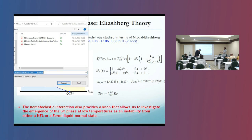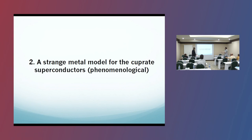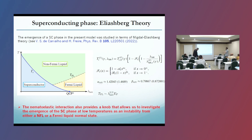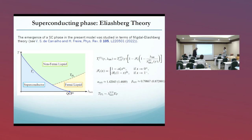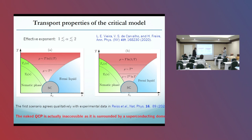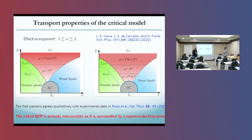So it is a bit suppressed but not completely suppressed. It is important to include this kind of coupling because it is completely unavoidable — in a lattice system, we have to include the coupling of the nematic variable to the lattice vibrations. This is an important thing that we have to include.